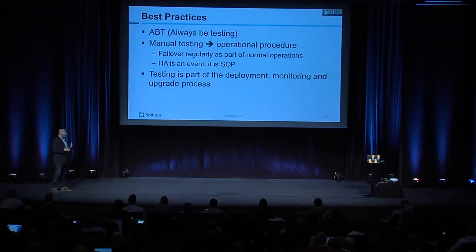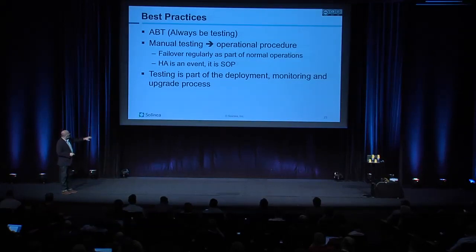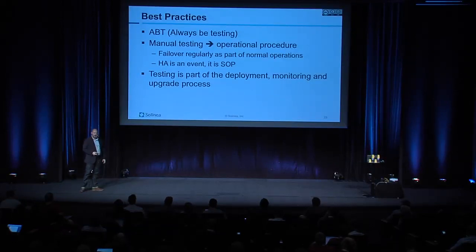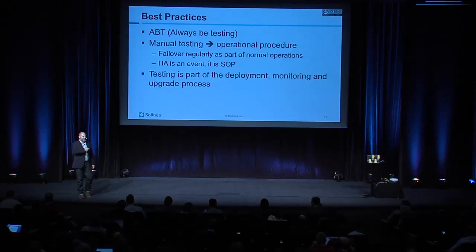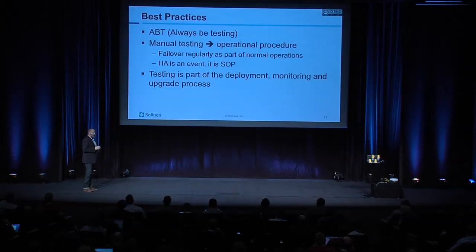In closing, what are the best practices? First of all, always be testing. Testing is part of operations — it's not an event, it's not a person. As much as possible, you need to be transitioning manual testing into operational procedures, whether that's tools or a procedure built into the standard way you do things. One of those things — I know a lot of people don't like this — is failover regularly. If you're using HA and you say 'I've never seen a failover,' whenever I hear anyone on my staff say that, we're failing over right now, and you're going to do it. Failover should not be an event; it should just be how we do things, and we should be able to failover almost at any time.